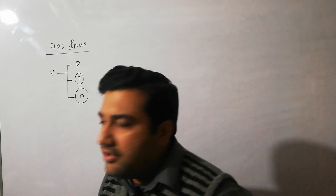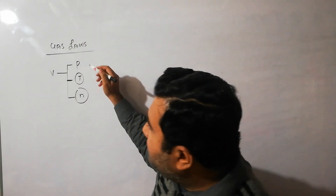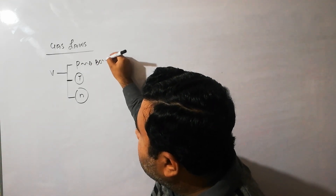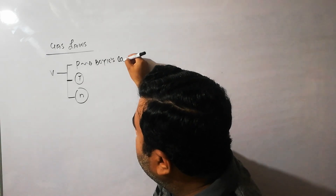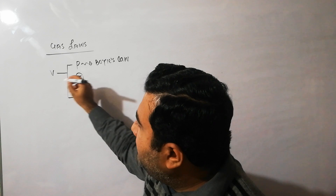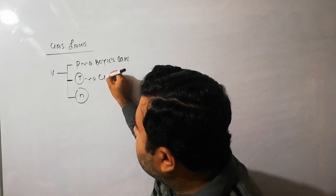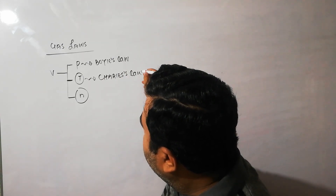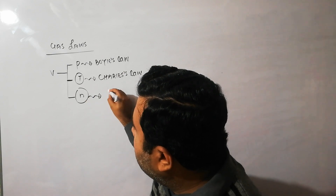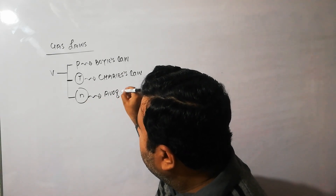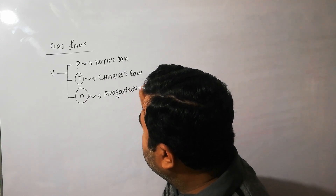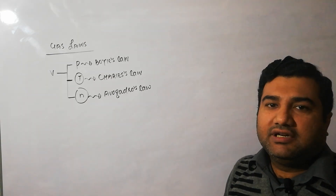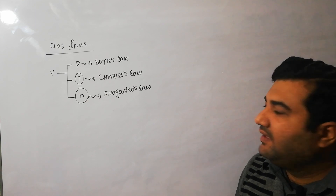Gas laws relate the volume of a gas with applied pressure, applied temperature, and quantity of the gas. The law which develops a relation between volume and pressure is called Boyle's Law, presented by Robert Boyle. The law which develops a relation between volume and temperature is called Charles's Law. And volume and number of moles are related through Avogadro's Law. We are going to discuss these three laws one by one.